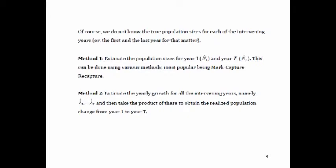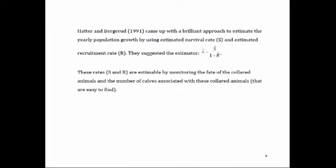Using mark-capture-recapture you can calculate population abundance and take the ratio, or you can calculate the growth rate. Hatter and Burgrode, in a beautiful paper, showed that lambda can be calculated without estimating populations per se. All you need is the survival rate for that year and the recruitment rate. If those are estimable, we can know how the population is growing.